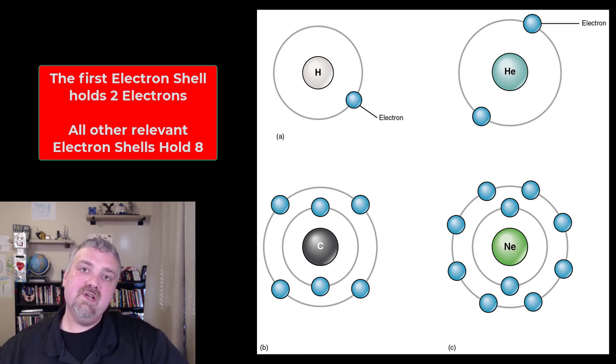After that, all the remaining shells we care about can hold eight, because we only really care about the first 20 elements on the periodic table. In human anatomy and physiology, there are certainly some exceptions, but if you understand that the first shell can hold two electrons and all the other shells we're going to talk about can hold eight, you're going to be perfectly fine.